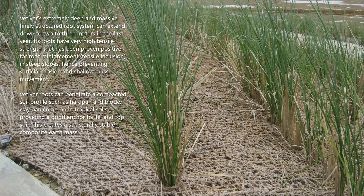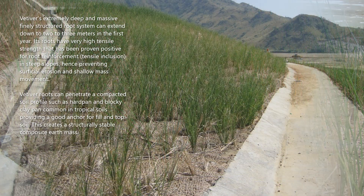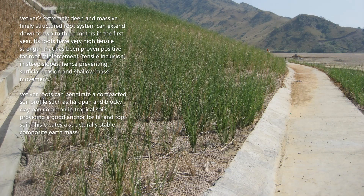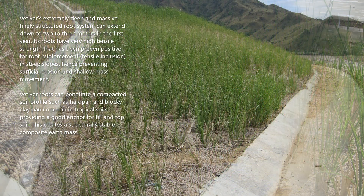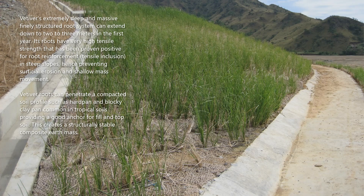In steep slopes, this prevents surficial erosion and shallow mass movement. Vetiver roots can penetrate a compacted soil profile such as hard pan and blocky clay pan, common in tropical soils, providing a good anchor for fill and topsoil. This creates a structurally stable composite earth mass.